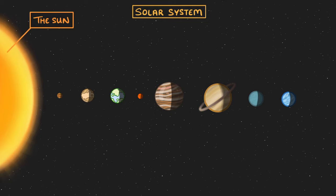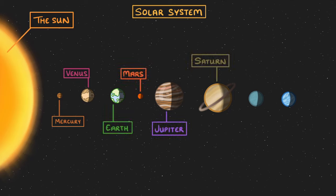You don't need to remember the order, but the planets are Mercury, Venus, Earth, Mars, Jupiter, Saturn, Uranus, and Neptune.